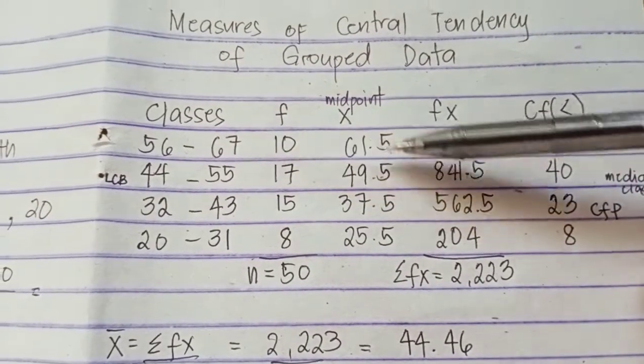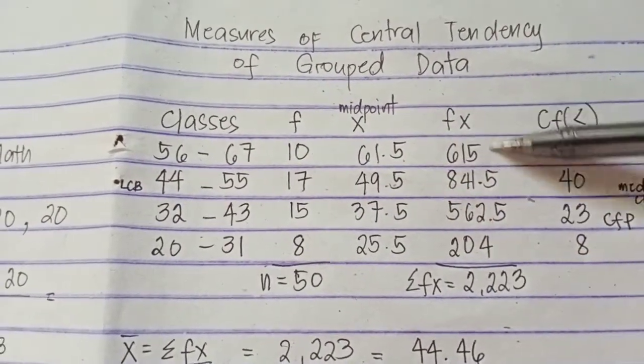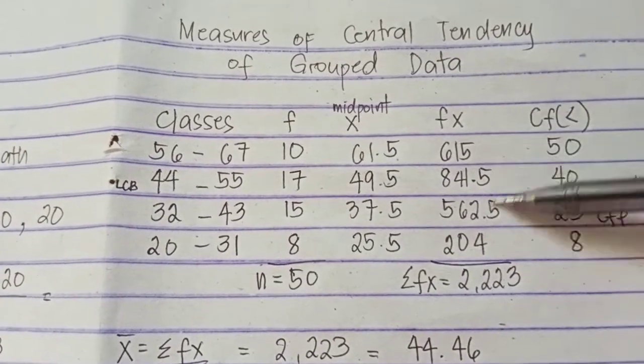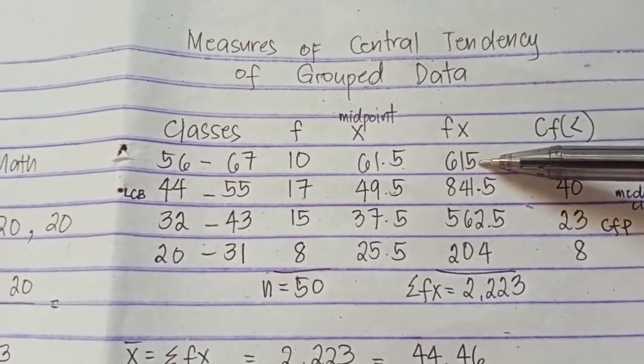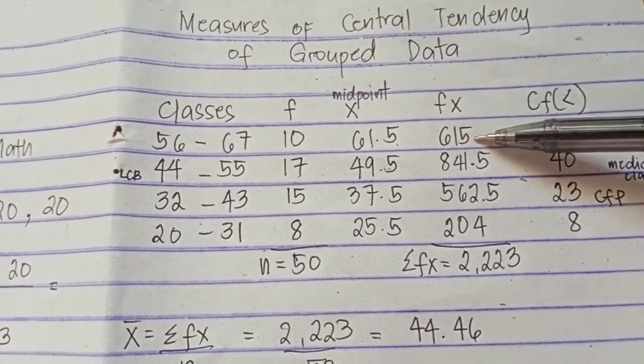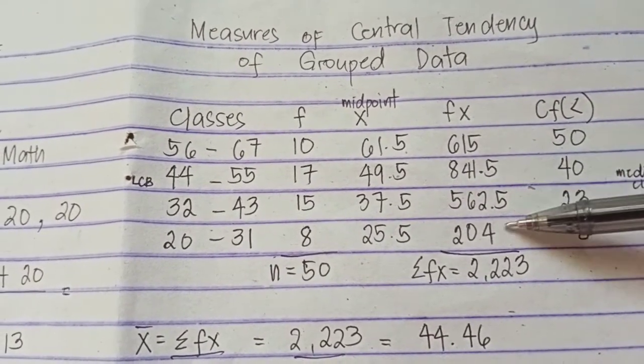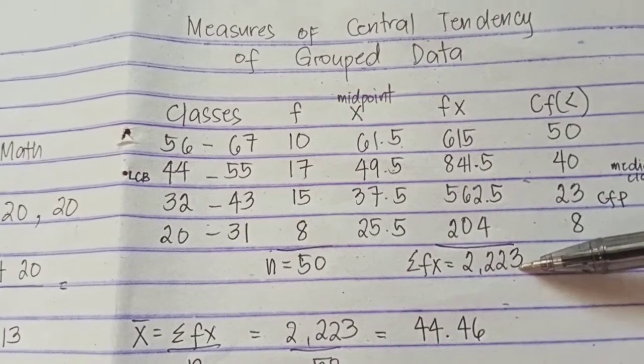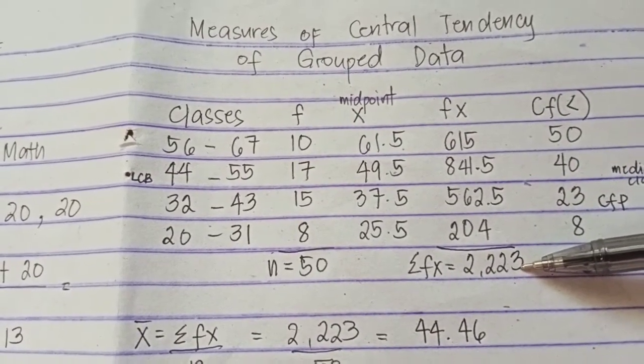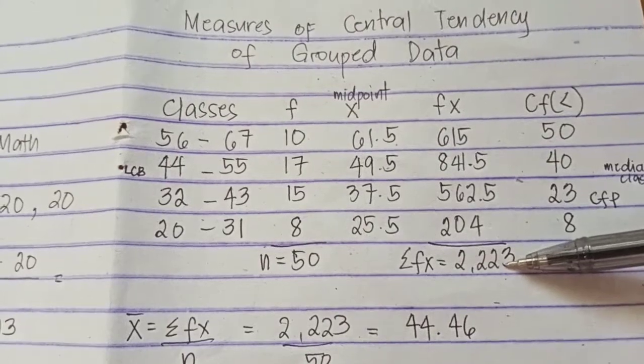After multiplying column F by column X, you simply have to total the obtained values for Fx. So, the total is 615 plus 841.5 until 204. The summation or the total of column Fx is 2,223.